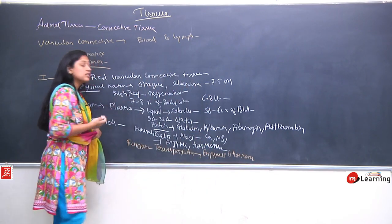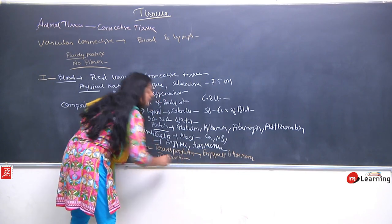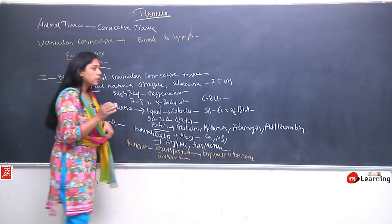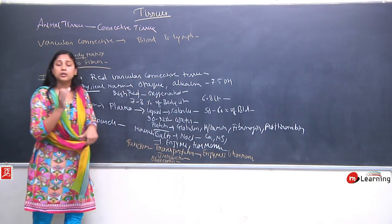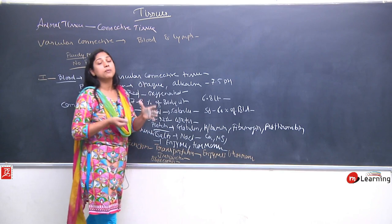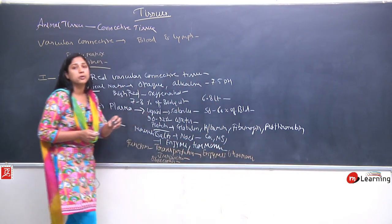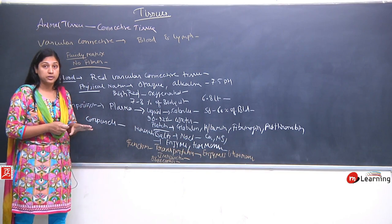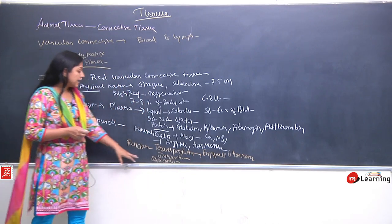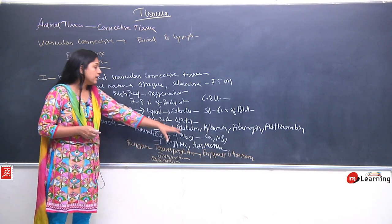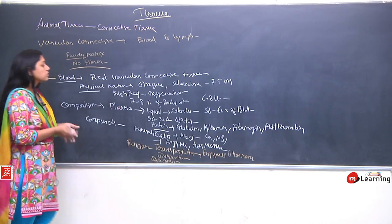The proteins in plasma help with immunity — globulin and albumin assist our immune response. Fibrinogen and prothrombin proteins help in blood clotting: if an injury occurs, blood quickly forms a clot, preventing blood loss. Platelets also play an important role in the clotting mechanism. So plasma functions include transportation of enzymes, hormones, and carbon dioxide; immunity; and blood clotting.